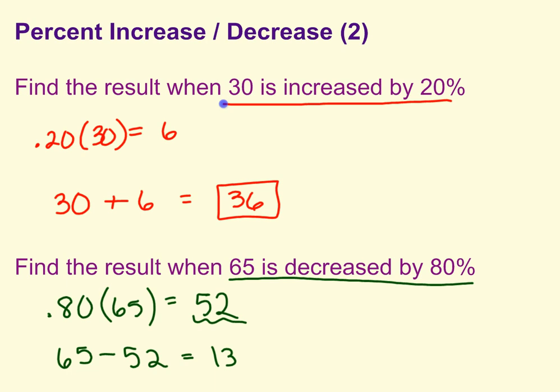So find the result when 65 is decreased by 80%. 80% makes sense that it got a lot smaller because it decreased by quite a bit. We took 65, and we subtracted the 52.